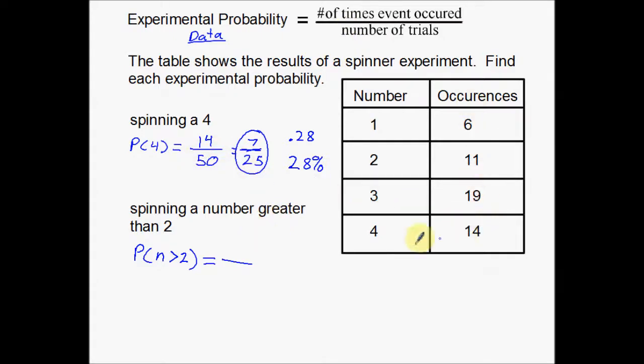I'm going to do the total number of trials. There was 50 total trials, 50 occurrences. Now I want the ones, the numbers that were greater than 2. In this case, my numbers greater than 2 are 3 and 4. So what I'm going to do is take these occurrences of 3 and 4, and I'm going to add them together to get a total of 33.